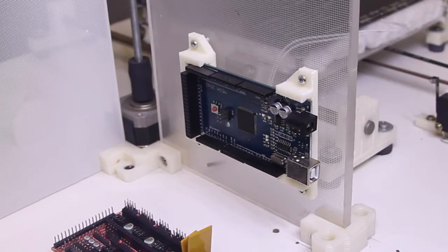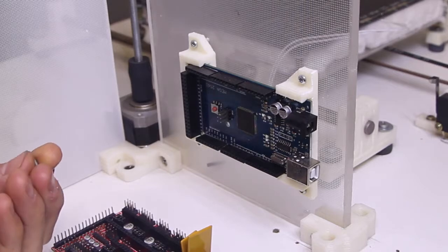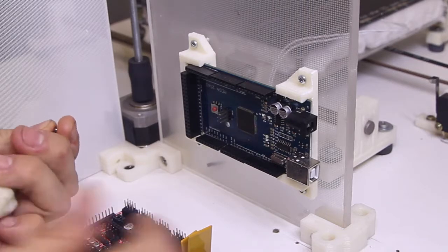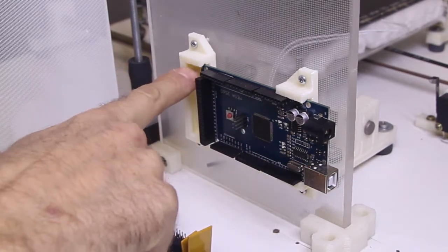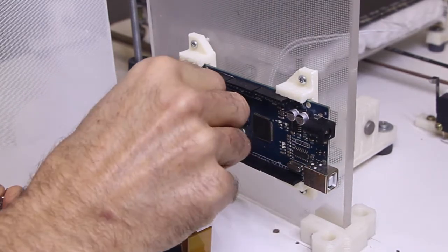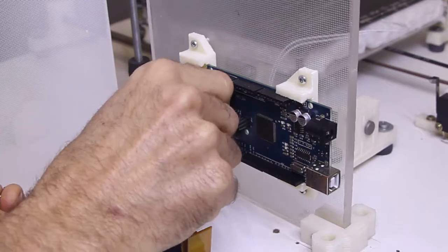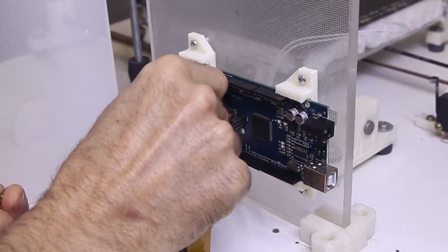We're going to mount the RAMPS 1.4 board onto the Mega 2560. Before we mount the RAMPS, I'm just going to put a lock screw on the Arduino. As you can see, it's sliding around in these brackets. In the corner here, there's a little hole for a little lock screw, and there's a hole in the circuit board. I'm just going to put a little M3 screw through that.